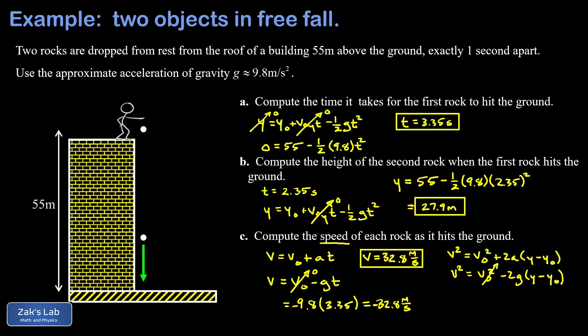Again, v₀ is zero so that term is gone. y final is zero, and I end up with v² = +2g·y₀ when we multiply -2g times -y₀. So we have 2 × 9.8 × 55. We smash those numbers together on the right hand side and take the square root. When we run the numbers, we get the same 32.8 m/s, and we're done.